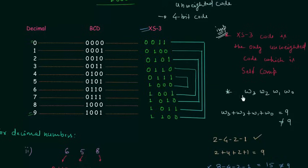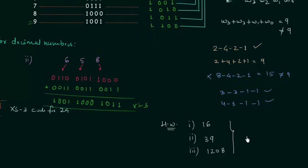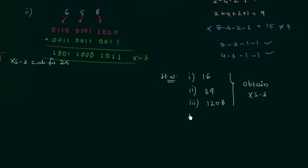Now we will move to homework problems. In the first problem, obtain XS3 code for 16. In the second, obtain XS3 code for 39. In the third, obtain XS3 code for 1208. And in the fourth problem, check whether the 5211 code is self-complementing or not. This is all for this lecture — see you in the next one.